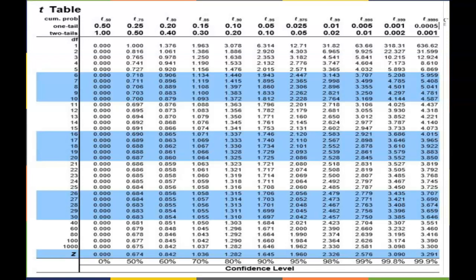The top row is the cumulative probability, so t at 50, t at 75, t at 80, t at 85, and it continues on. Then we have one tail. So if our distribution was like a less than or a greater than, then it would be one tail. If it's equal to, then it's two tails.